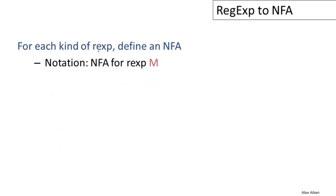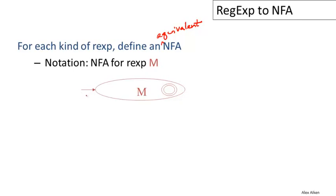The plan is that for each kind of regular expression, we're going to define an equivalent non-deterministic automaton that accepts exactly the same language as that regular expression. Here's the notation we're going to use: we'll indicate the start state with an arrow and the final state with a double circle. In the machines we build here, there will only be one final state.